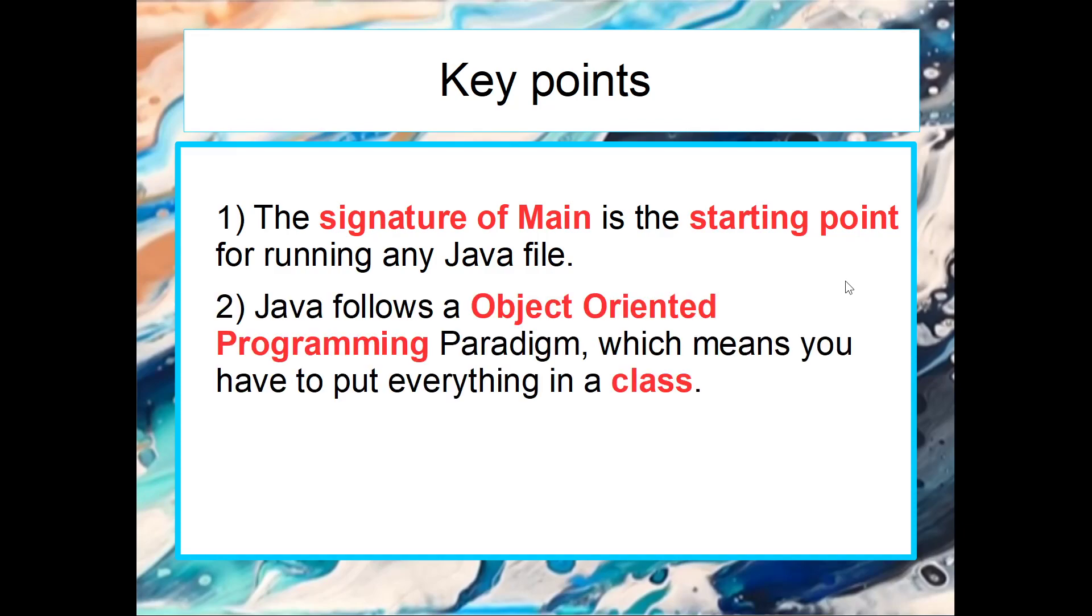Number two, because Java is an object oriented language, everything must be in a class. So in each of the code, in each file, you're looking for this keyword class and then you're looking for the main method. Number three, in between any code or when you want to write any code, you need to put it between two curly brackets.